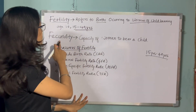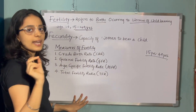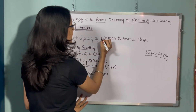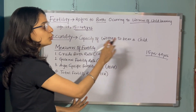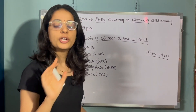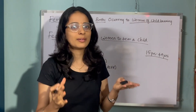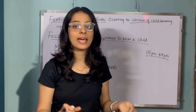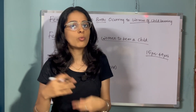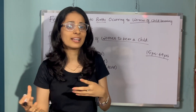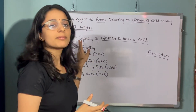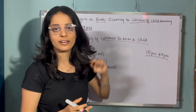Next we have fecundity. Fecundity is the capacity of a woman to bear a child. It means that one woman can bear 3 children or another woman can bear 1 child — it depends upon the medical condition or various factors. So fecundity is the capacity of a woman to bear a child.